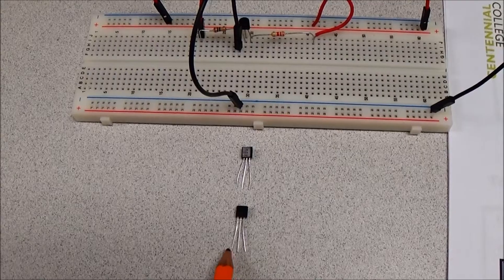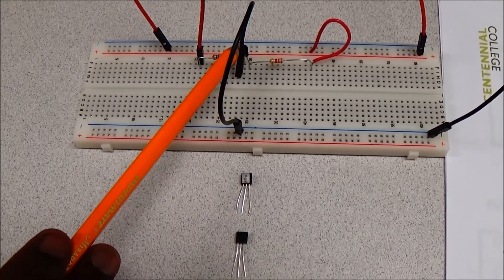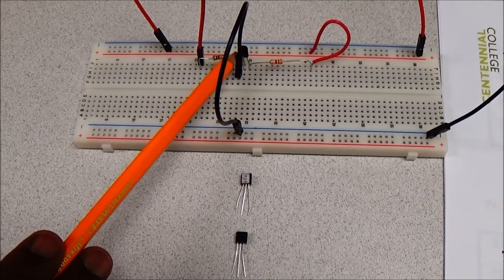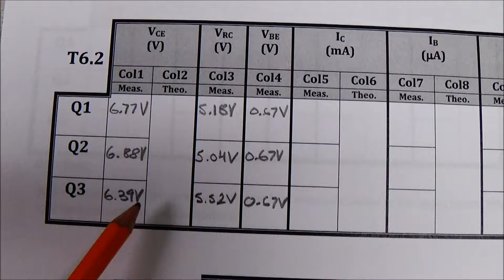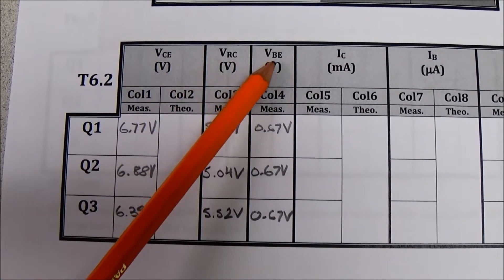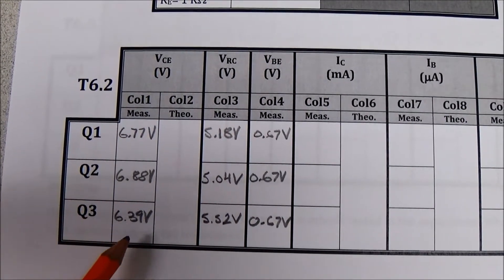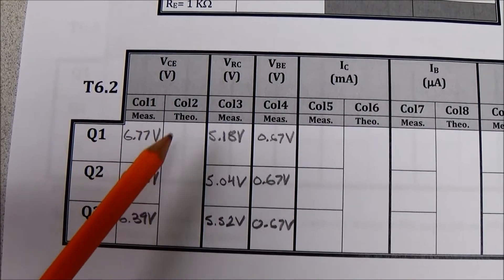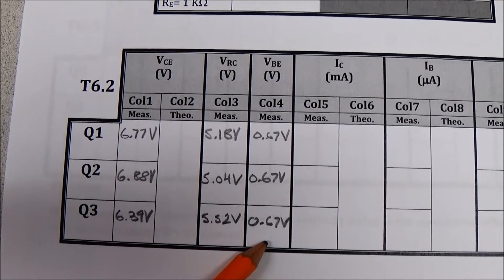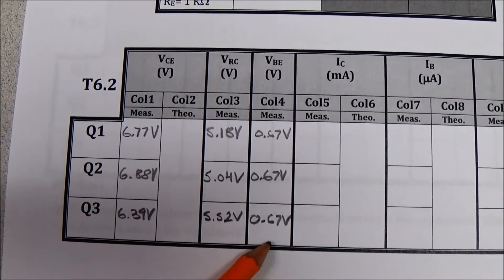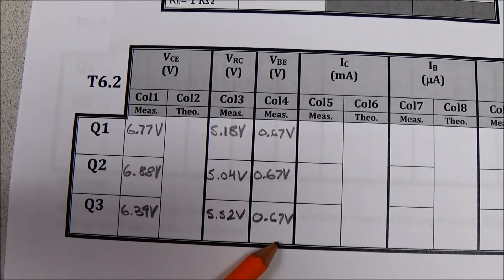I used three different pieces of 2N3904 transistors. I noted the values of VCE, VRC, and VBE for the three transistors and there are some differences across VCE and VRC, but VBE remains constant for me. It does not mean it should be the same for you also for all three transistors — whatever you get, you can record it here.